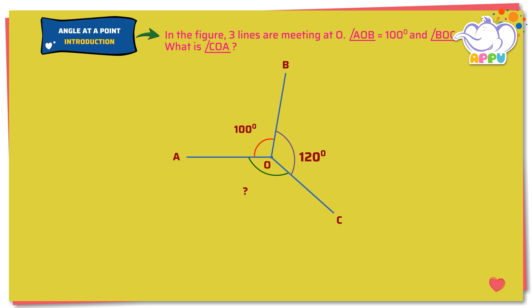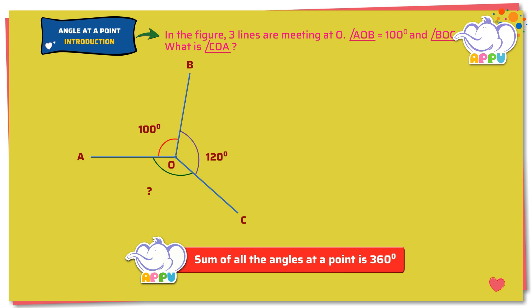Here we have three angles formed at O. Since the sum of all the angles at a point is 360 degrees, angle AOB plus angle BOC plus angle COA equals 360 degrees. 100 plus 120 plus angle COA equals 360.